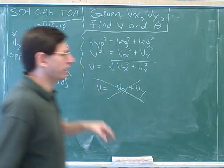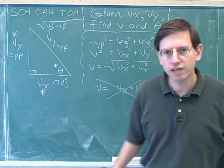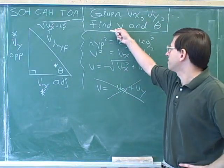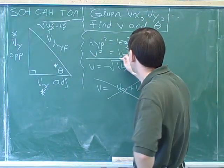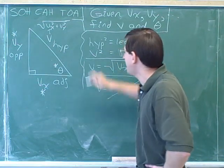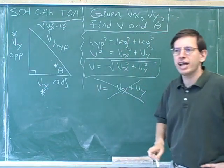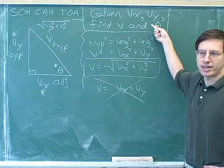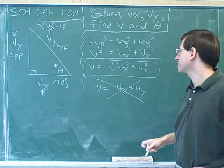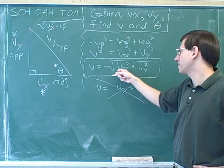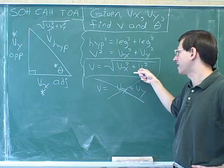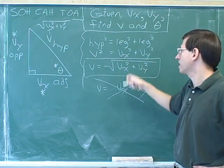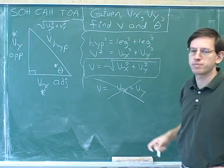Let's make sure this is an acceptable answer. Our goal was to get an expression for v — we've done that. The answer has to include only the givens and can't include theta because theta is an unknown. Our answer only involves the two givens, v sub x and v sub y, so this is an acceptable answer.